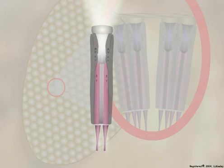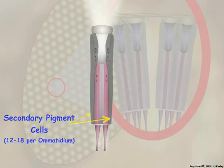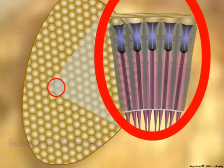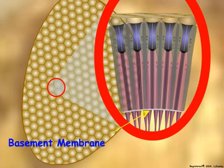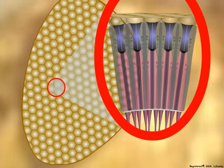Retinula cells are surrounded by 12 to 18 secondary pigment cells so that each ommatidium can be functionally isolated from its neighbors. Ommatidia sit on a basement membrane in the retina, and axons from the retinula cells combine below the membrane to form the optic nerve that leads to the protocerebrum of the insect brain.